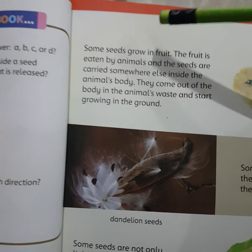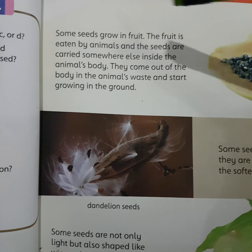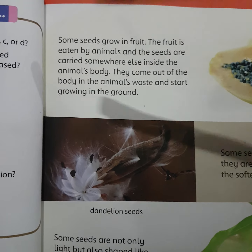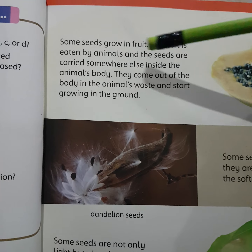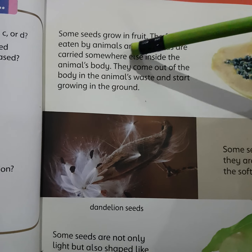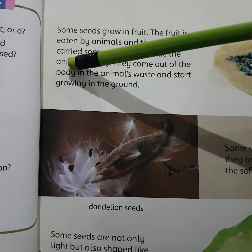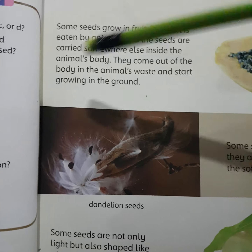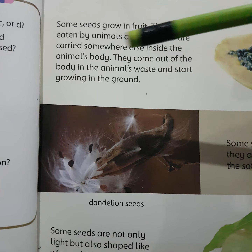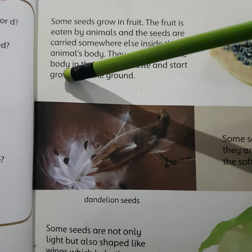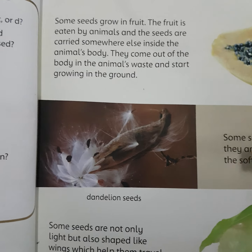Page number 43. Some seeds grow in a fruit. The fruit is eaten by animals and the seeds are carried somewhere else inside the animal's body. They come out of the body in the animal's waste and start growing in the ground.